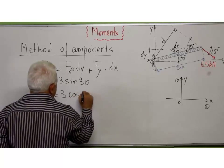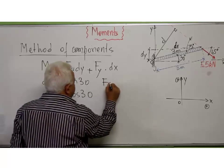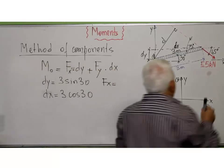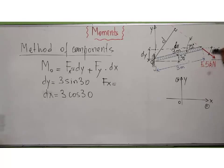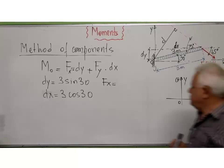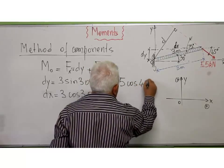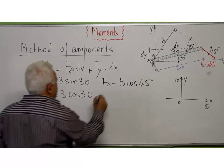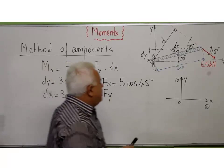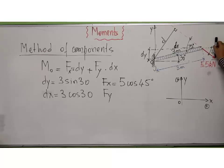Which is 3, cosine 30. Fy, Fx, Fx is the component along the horizontal axis, which is here, is 5 cosine 45, 5 cosine 45 degrees. Now, Fy, which is the component of the force F along y, the vertical axis, which is 5 sine 45.